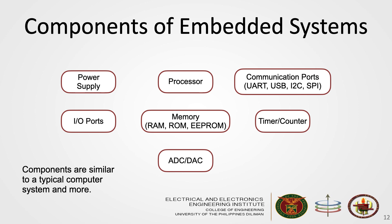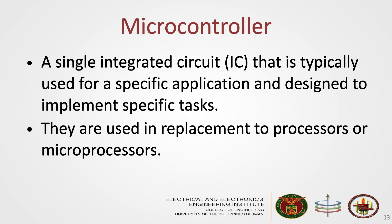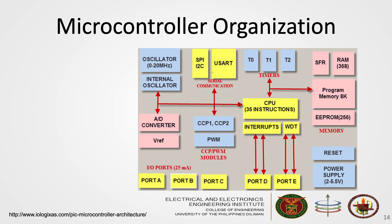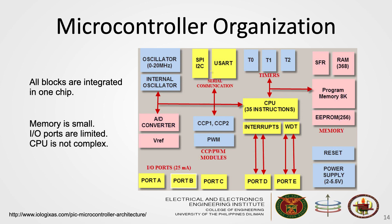But wait — this really looks like a typical computer system and more. So how is it different from other computer systems, and how can we achieve the important characteristics of embedded systems? The answer is the use of microcontrollers. A microcontroller is a single IC typically used for a specific application and designed to implement specific tasks, used in replacement of processors or microprocessors. All blocks — IO ports, CPU, memory, timers, ADC, and DAC — are all integrated in one chip, dedicated to certain functions for a specific application. Since it's doing specific functions, the memory doesn't need to be large, the IO ports don't need to be many, and the CPU doesn't have to be complex.